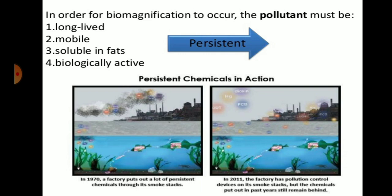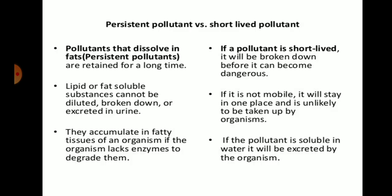In this figure, in 1970 factories released persistent chemicals through their smokestacks into aquatic ecosystems, air, and water bodies. By 2011, these factories had pollution control devices on their smokestacks, but the chemicals that had persistently accumulated in the aquatic ecosystem still remain — they cannot be removed. So bioaccumulation and biomagnification continue in that ecosystem.